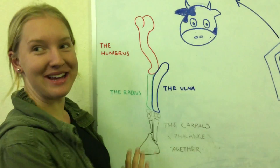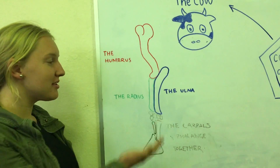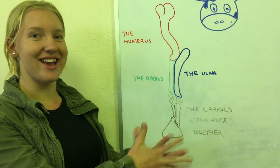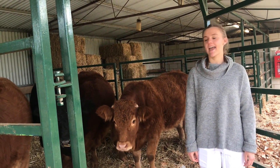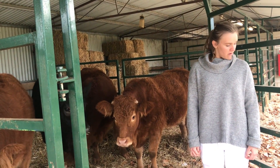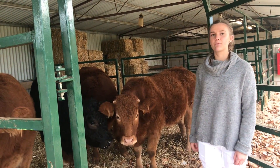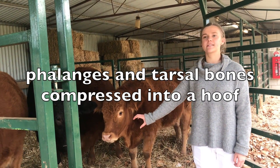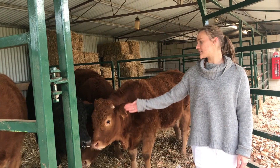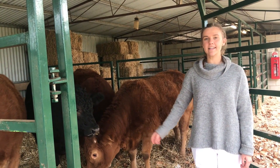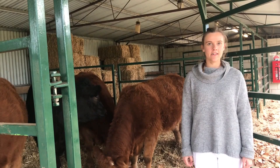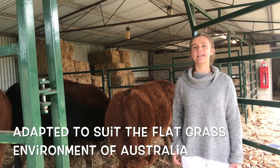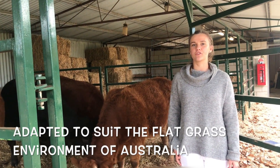In the cow, the pentadactyl limb consists of the humerus, the radius, the ulna, the carpals, and phalanges. Within Australia, cattle are one of the major livestock forms. The cow's pentadactyl limb is found in the forelimbs, although their phalanges and tarsal bones are all compressed into a hoof, while the rest of their ulna, radius, and humerus are present in all forelegs. The hoof is an adaptation also proven to be beneficial in running in the flat environments of Australia.